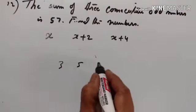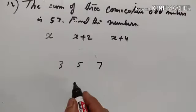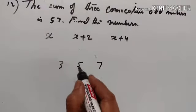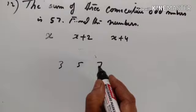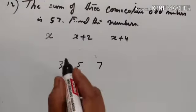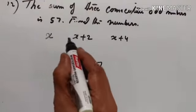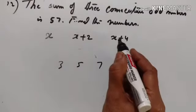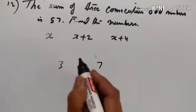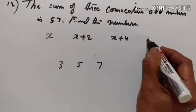Take 3, 5 and 7 — these three are odd numbers. If the first one is 3, the second one is 3 plus 2, and the third one is 3 plus 4. Similarly, if the first number is x, the second number is x plus 2, and the third number is x plus 4. The sum of these three numbers is equal to 57.